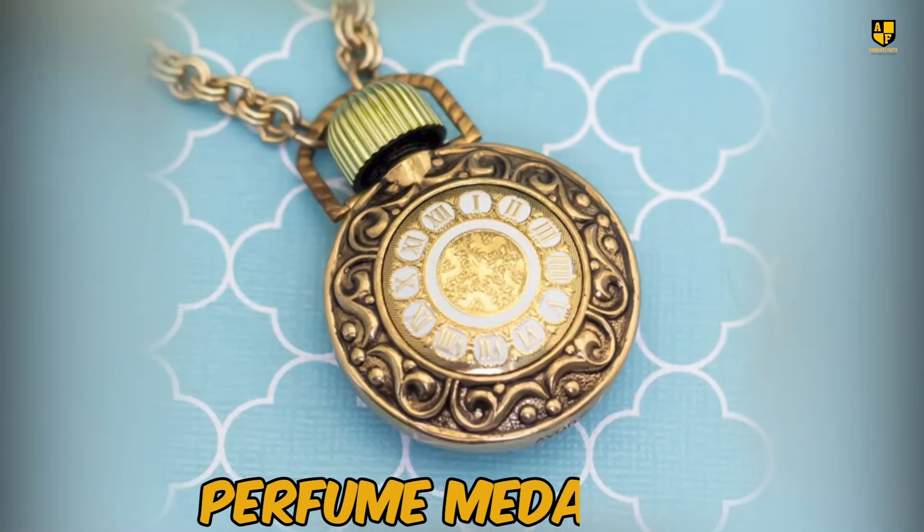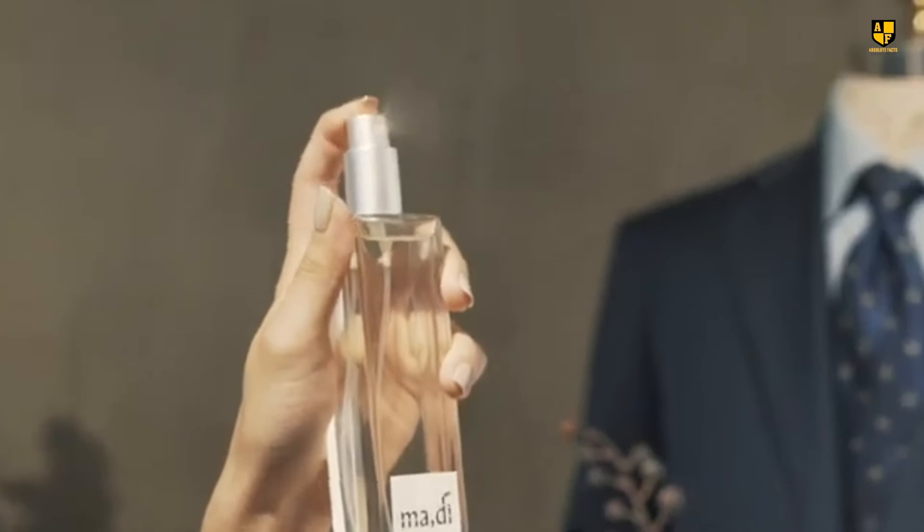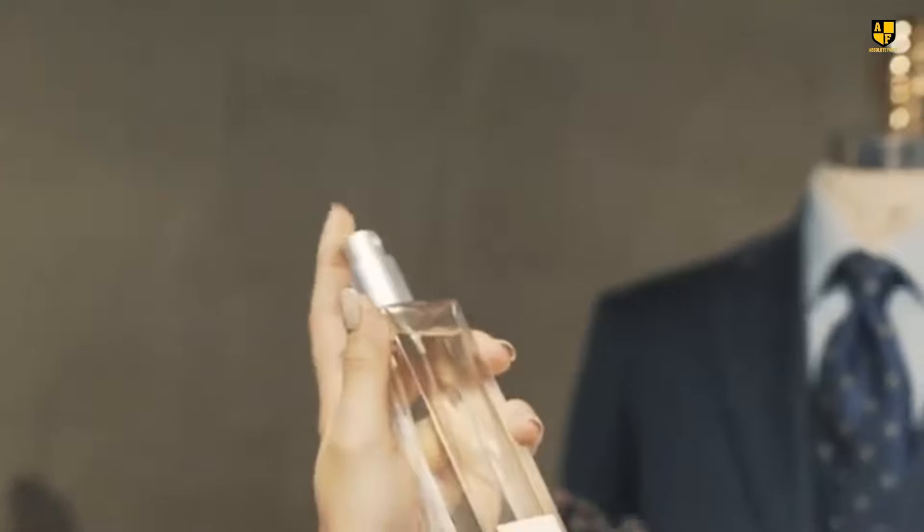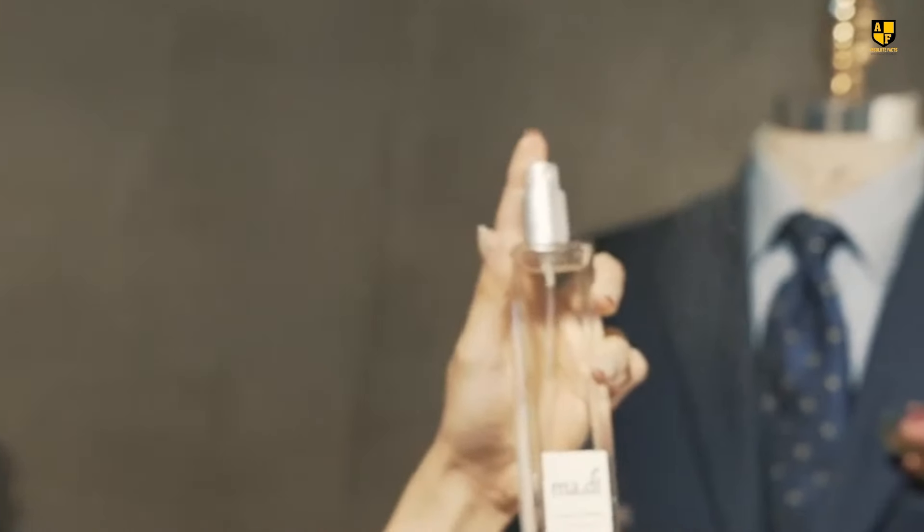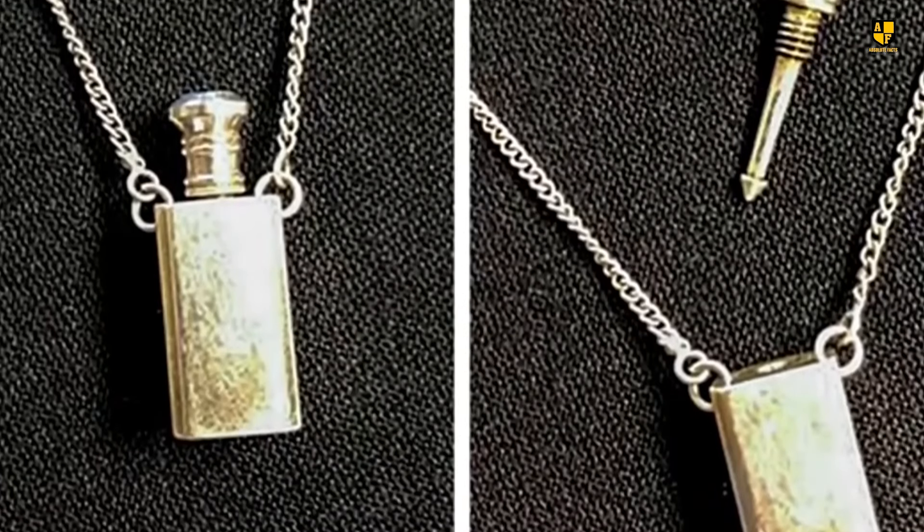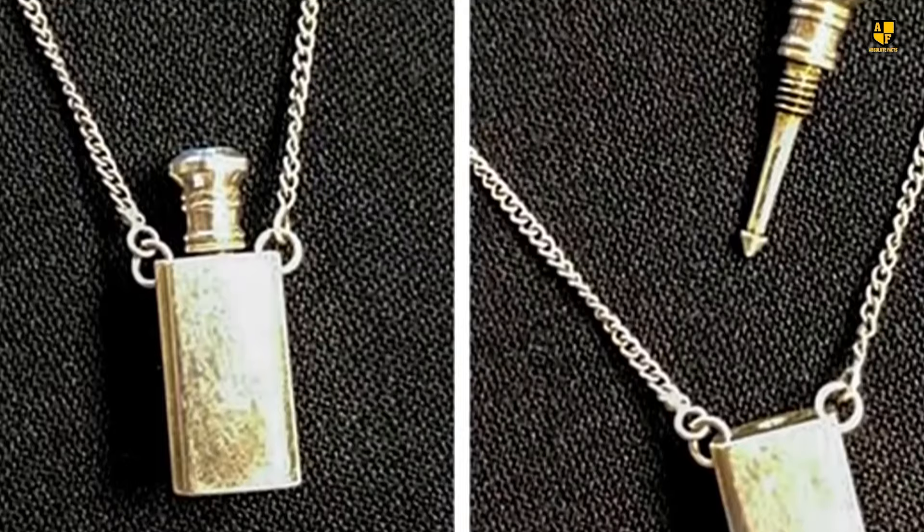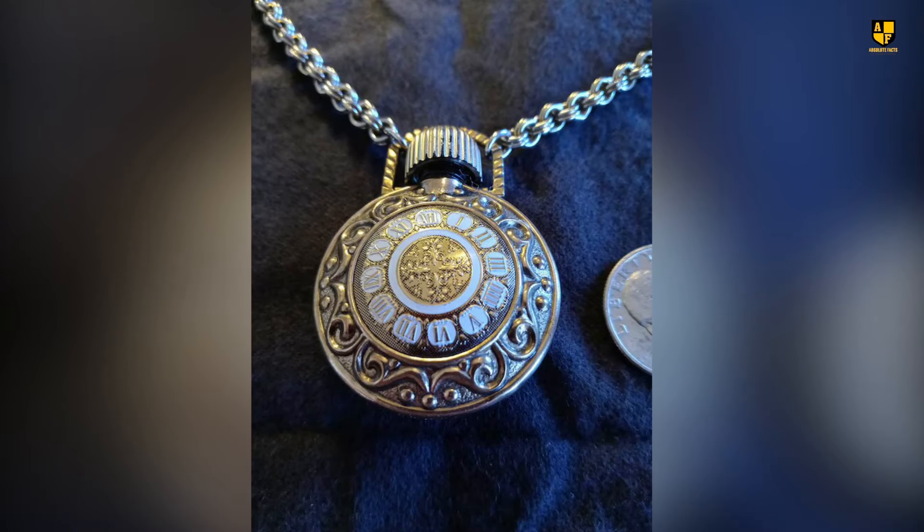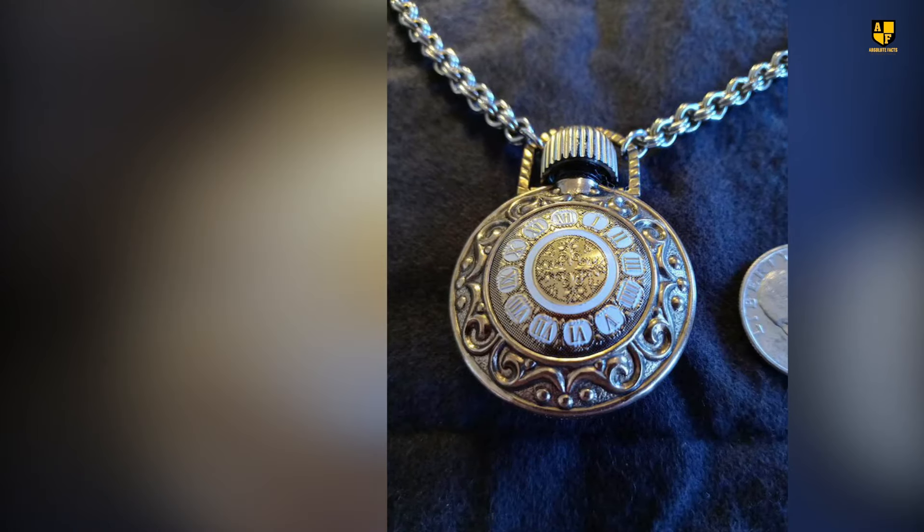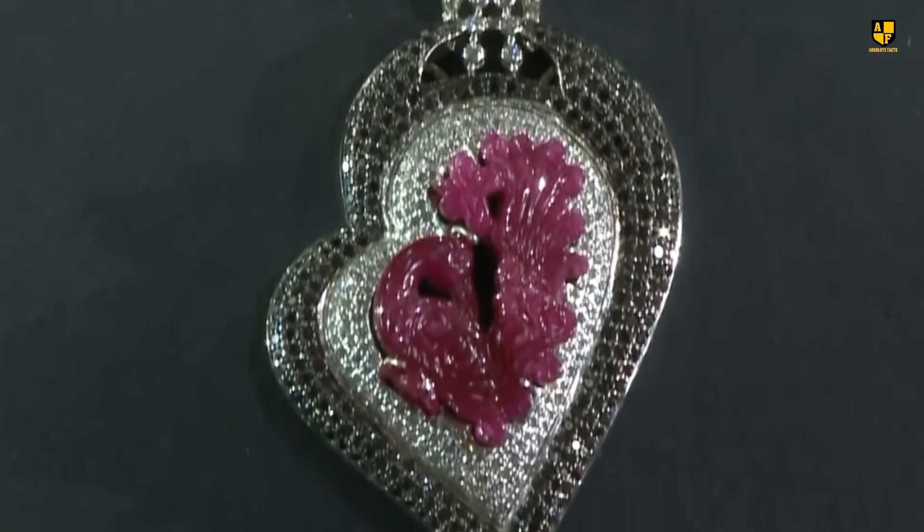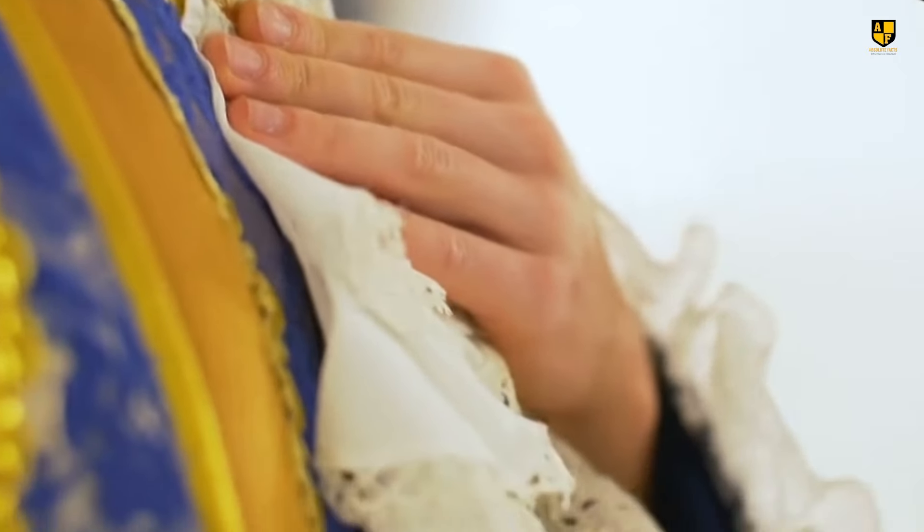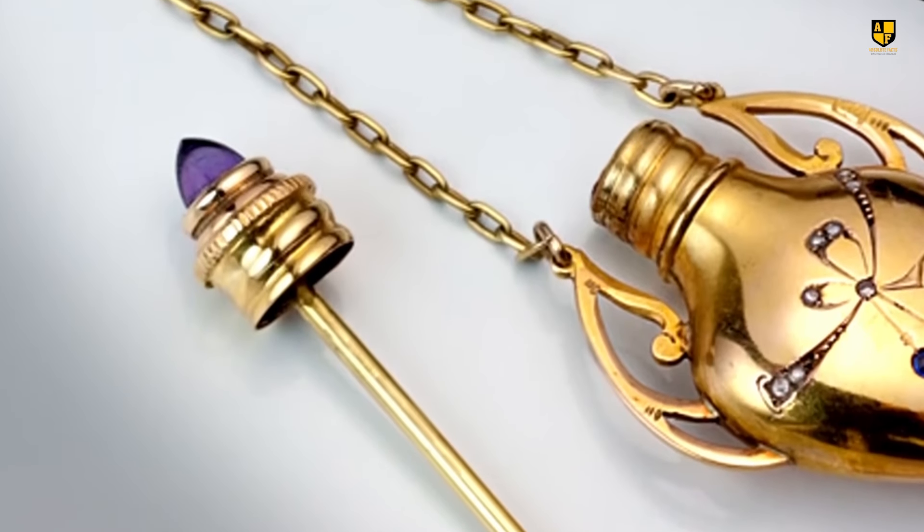Number 4. Perfume Medallion. Combining elegance and utility, the perfume medallion was a captivating innovation of 18th and 19th century Europe: a hollow necklace that doubled as a discreet perfume holder. Adorned with intricate designs, these medallions reflected the artistry of their time while serving a surprisingly practical purpose. With a simple click, the medallion would open, revealing a scented treasure within. A quick dab of the perfume inside allowed wearers to refresh their signature scent anytime, anywhere.